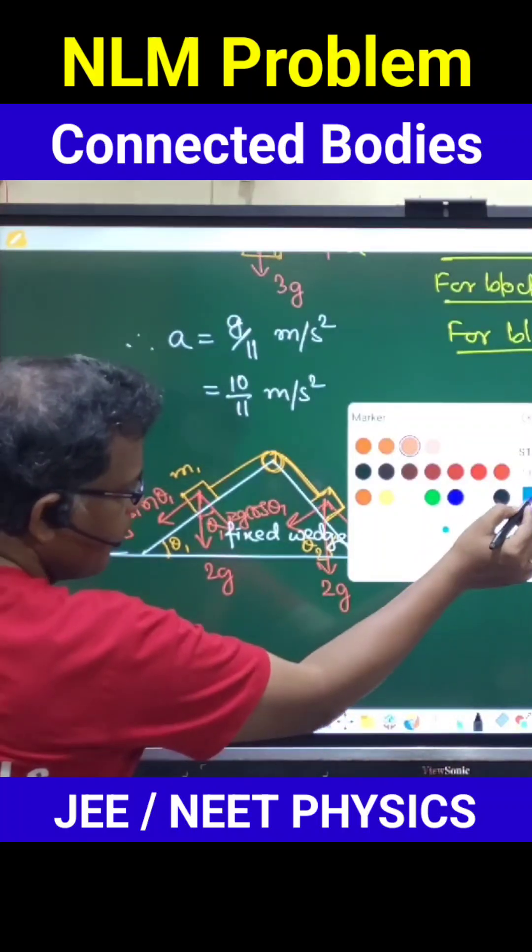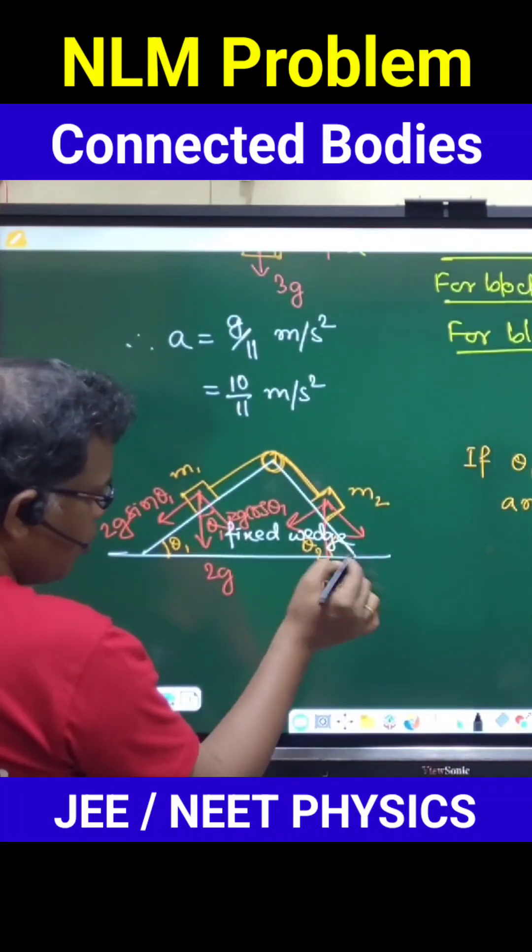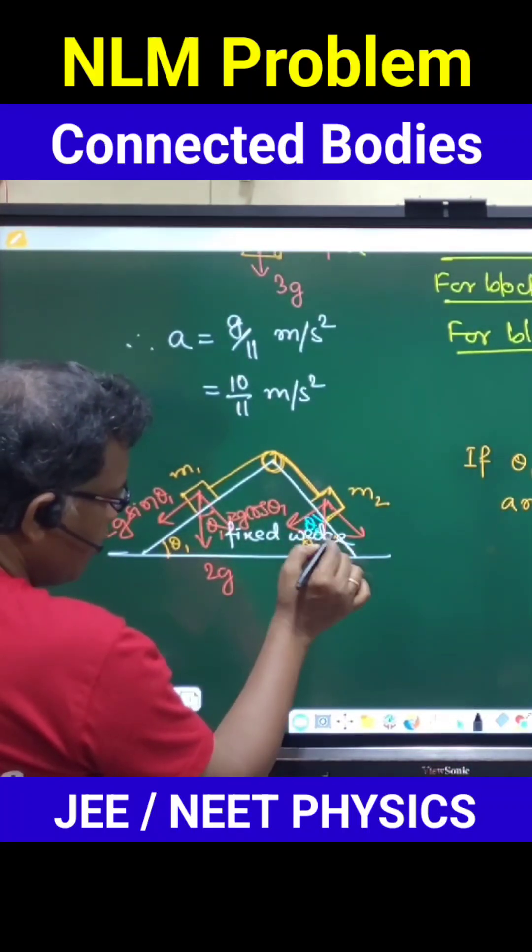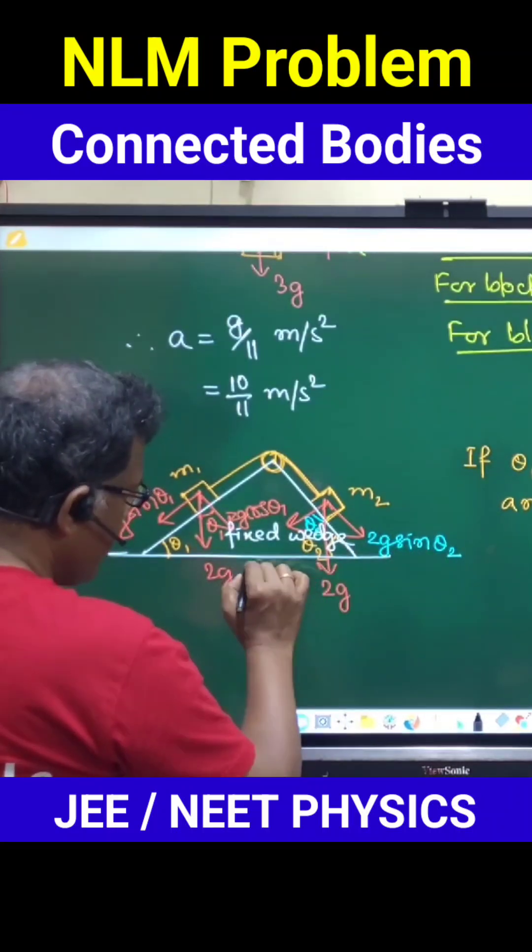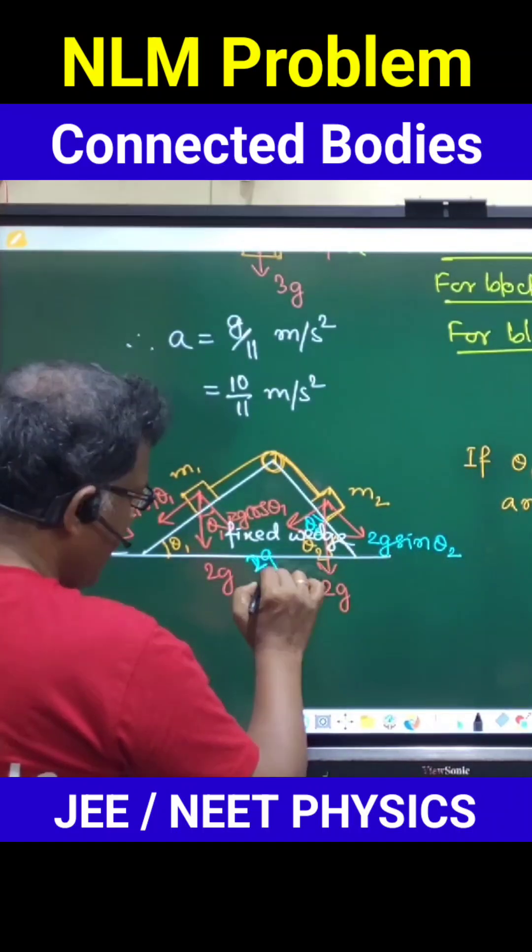Similarly on the another mass, if I see this 2g here, it will be again this is theta 2, and this one will be 2g sin theta 2, and this direction it will be 2g cos theta 2.